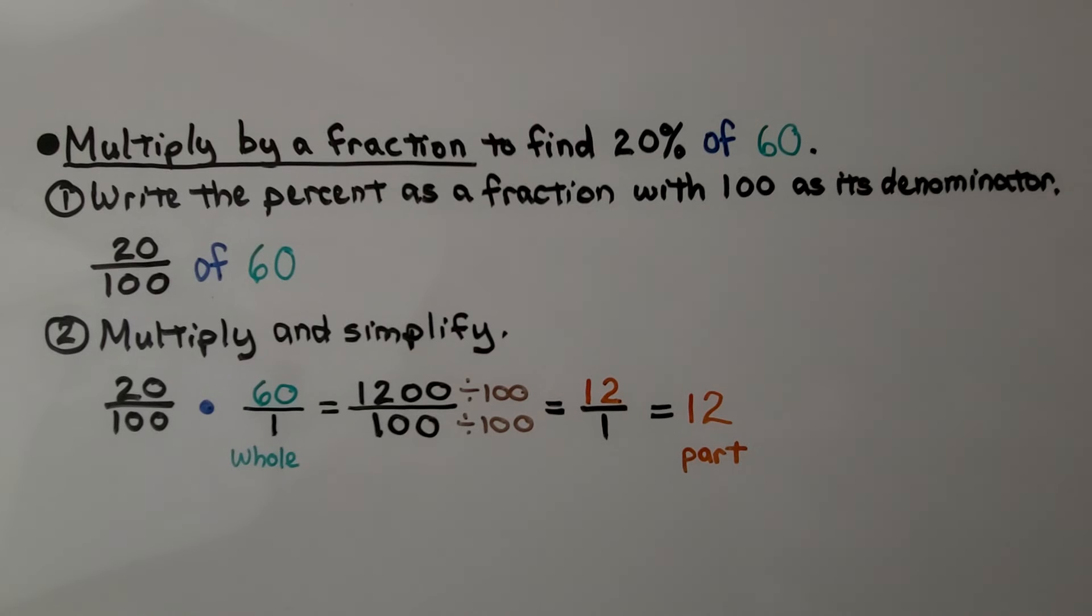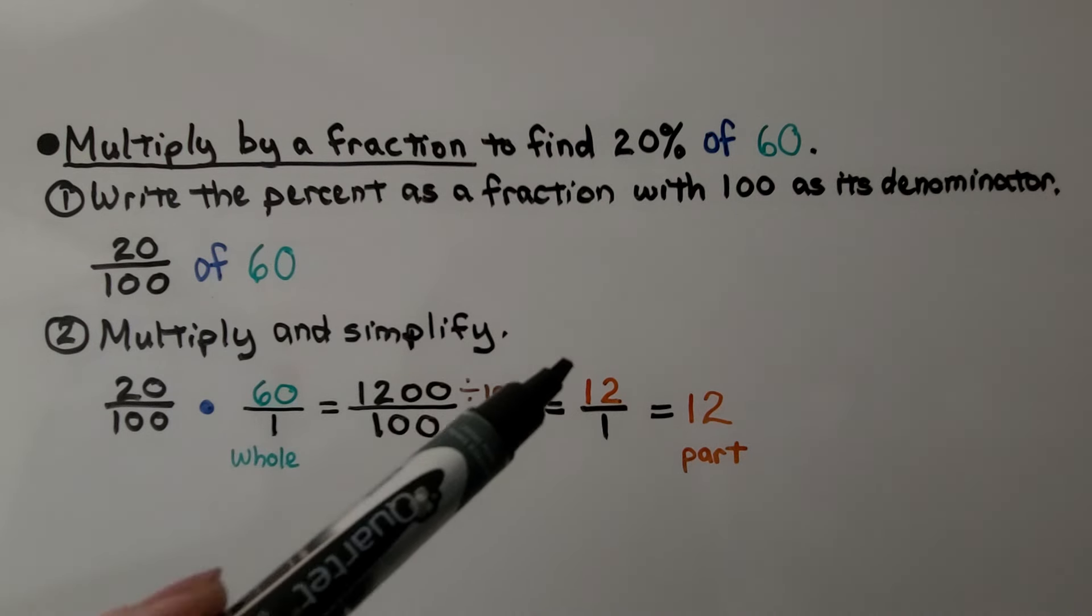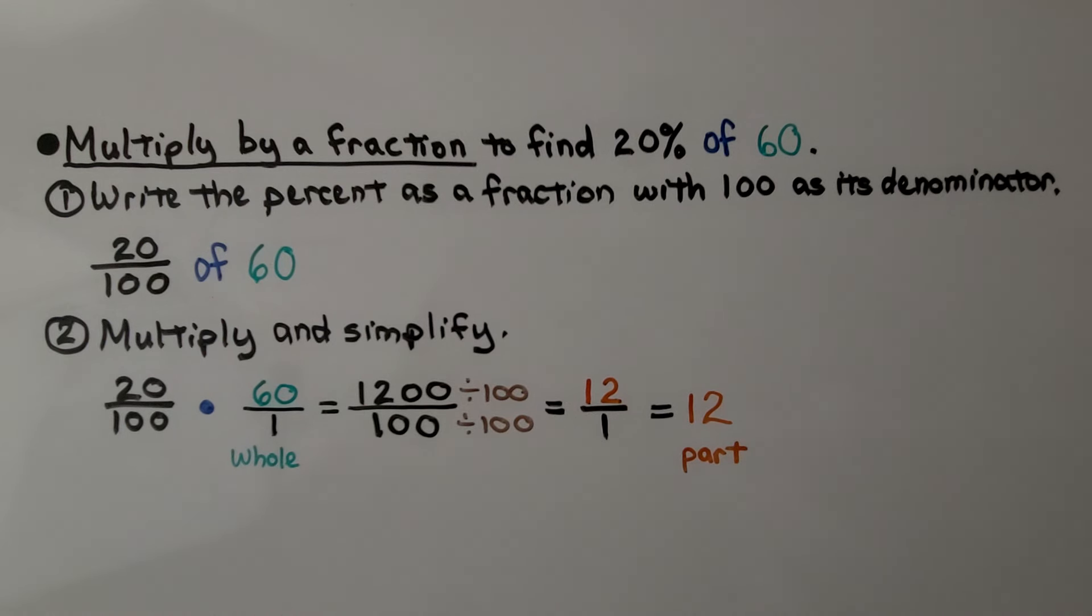Here's another example of multiplying by a fraction. We write the percent as a fraction with 100 as its denominator, and we multiply and simplify. We can write the 60 as 60 over 1. That's the whole amount. We're looking for the part. And we have 20 hundredths times 60 over 1. We've got 20 times 60, which is 1200, and 100 times 1, which is 100. We can simplify this by dividing both the numerator and denominator by 100. We get 12 over 1, which is equal to 12. We know 20% of 60 is 12.